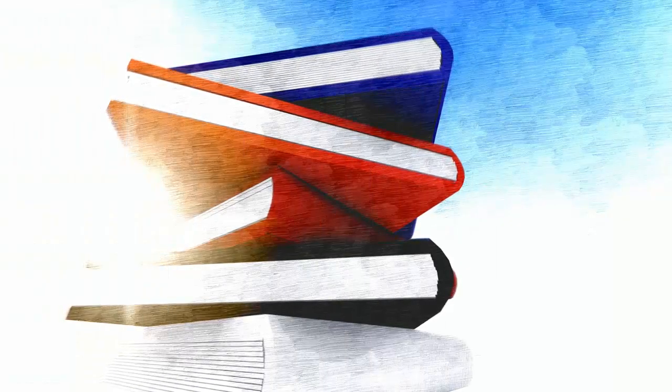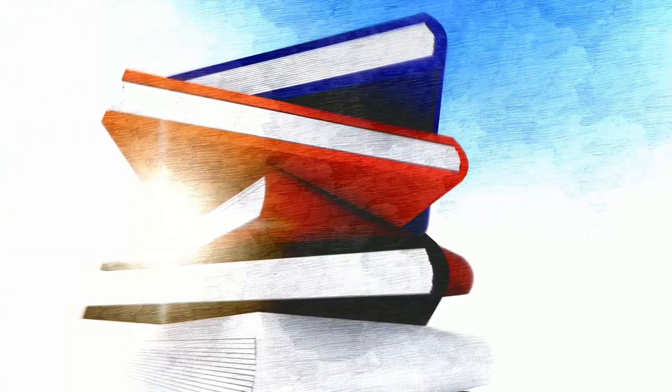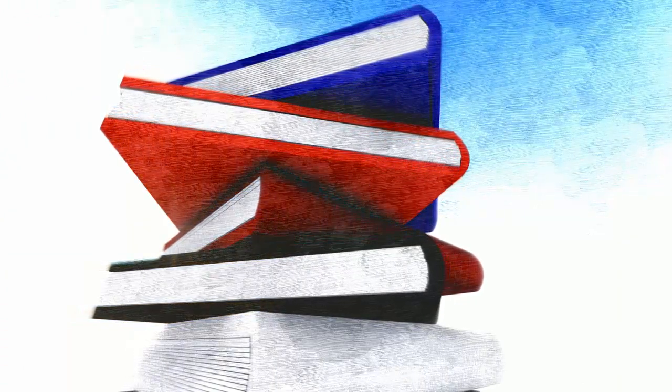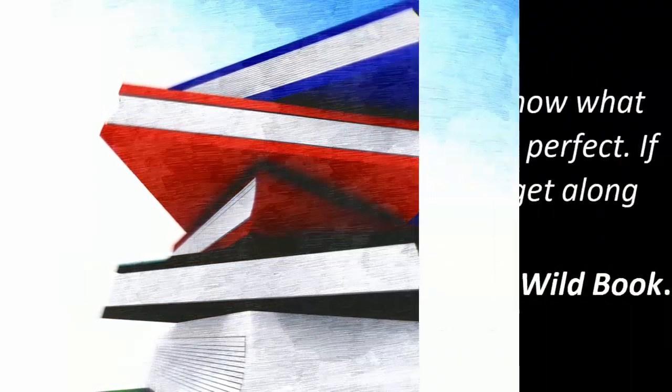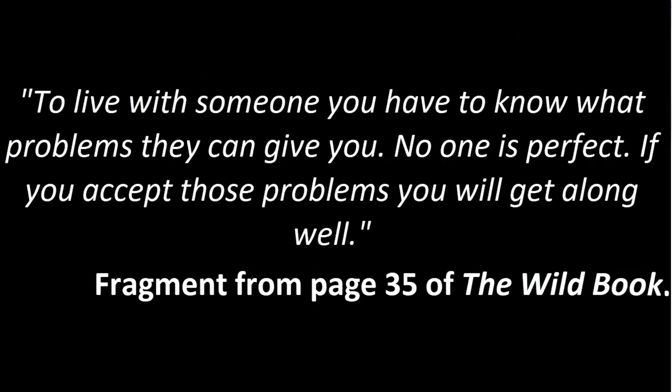Well, now let's analyze. This book has different messages, not only related to reading, but also to different areas. One of those messages is told to us on page 35 and it goes like this: To live with someone, you have to know what problems they can give you. No one is perfect. If you accept those problems you will get along well.